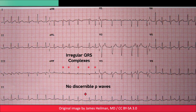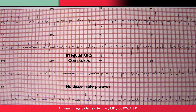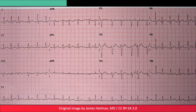When the fibrillatory waves are imperceptible, the underlying rhythm can still be recognized via the irregular RR intervals. With AFib, the RR intervals are generally not of equal duration — as in this ECG, some intervals will be longer while others will be noticeably shorter.